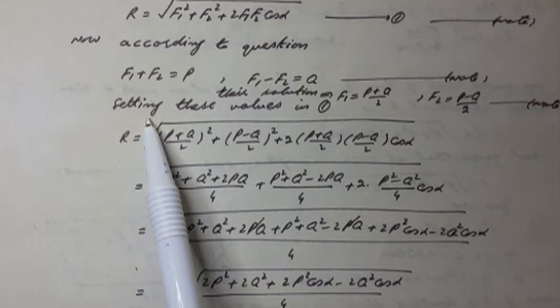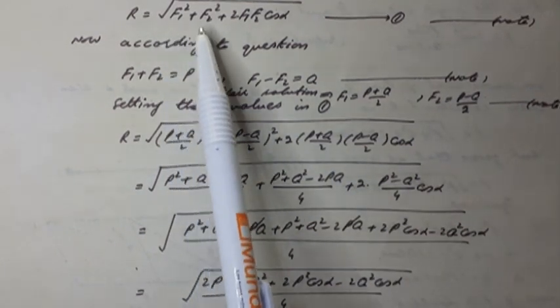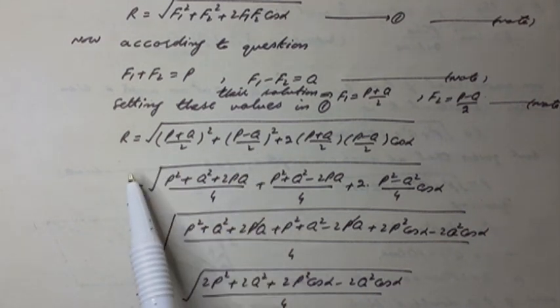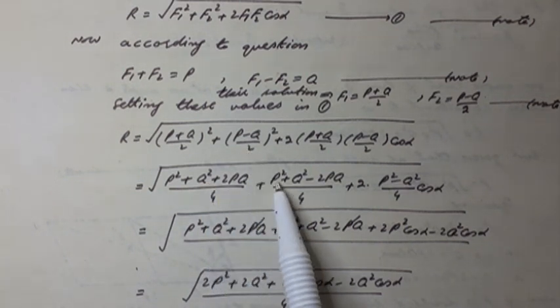Therefore, putting the values of f1 and f2 in equation 1, we have next is just simplification. So it can be written as p squared plus q squared plus 2pq over 4 plus p squared plus q squared minus 2pq over 4.